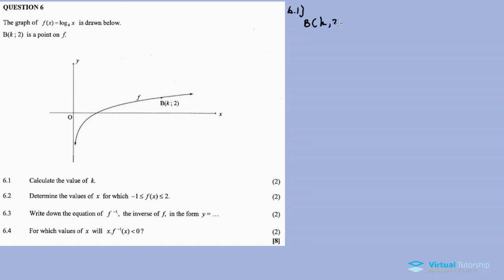Point B is (k, 2) and it's in a function f(x) which is equal to log₄ x. So basically I need to substitute y in this equation to find the x value, which is k.